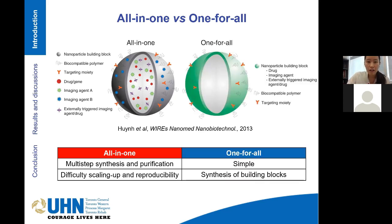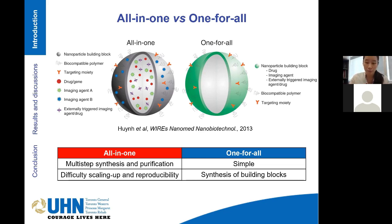With that being the case, there is a different strategy that we are currently looking into, and that is known as the one-for-all strategy, where the drug and the imaging agent itself is part of the nanoparticle building blocks and they can self-assemble into nanoparticles. This method is a lot more simple, and this simplicity allows easier translation for clinical applications. One thing you can do is synthesize different nanoparticle building blocks, and those building blocks with different drugs or imaging agents can give rise to many different modalities for imaging or therapeutic purposes.